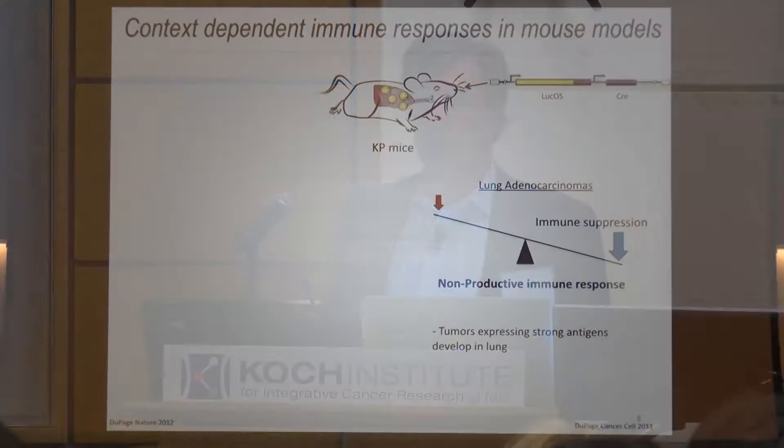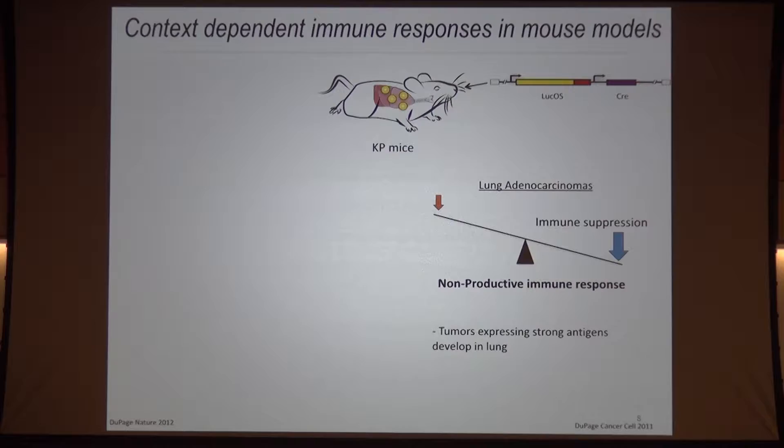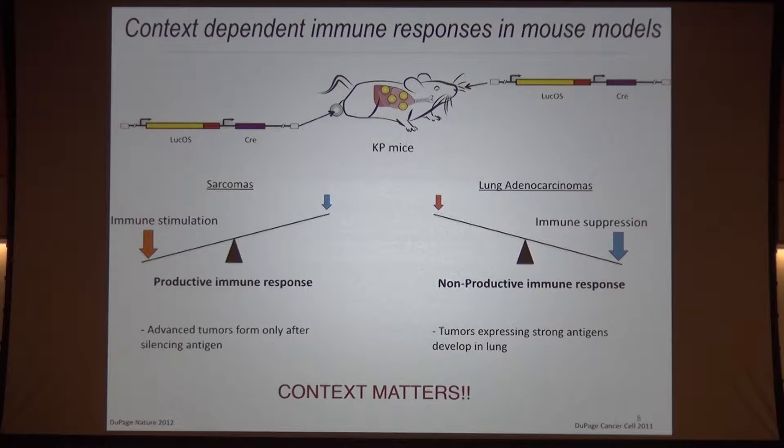Another example of context mattering: in contrast to the lung cancer situation where we observed immunosuppression as the mechanism of escape, when Michael injected the same virus into the exact same mice but in the leg to develop sarcomas, he found a very different result. There the immune response was very active, and the only tumors that grew out were ones that had lost antigen expression — again, classic immuno-editing. The conclusion is that context matters, and not one-size-fits-all explanations. We have to keep an open mind about what's controlling what in different patients and in different tumor sites.